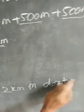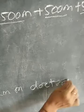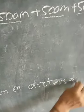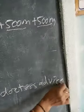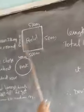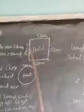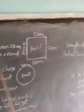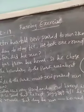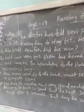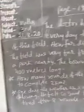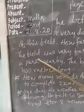Doctor's advice. So, understood? Total length equals one round, and the doctor told him to run two kilometers every day — that is the answer. Now, come to the second question.